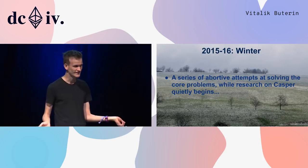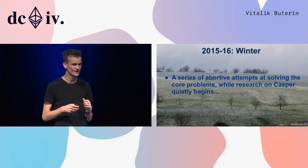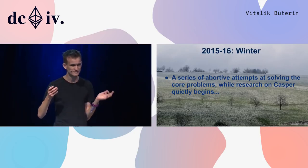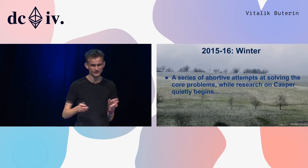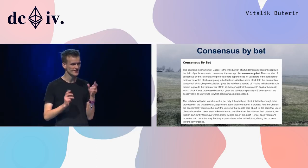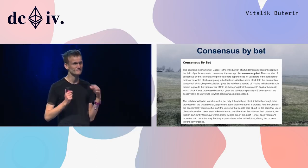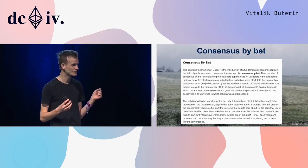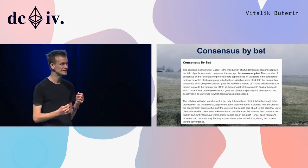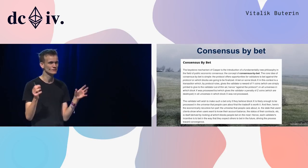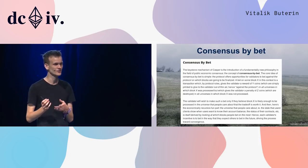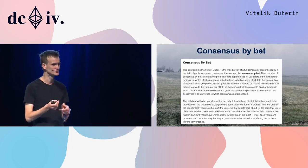After this came a bit of a winter — a bunch of different abortive attempts at solving core problems in proof of stake and scalability. Research on Casper quietly began; Vlad quietly began his work on Casper CBC. One of the first interesting ideas was consensus by bet, where people would bet on which block becomes finalized next, and more people betting on a block feeds into others' bets. You'd have a recursive formula where more and more people bet more and more strongly on a block over time.